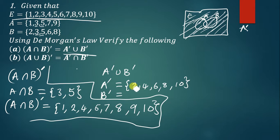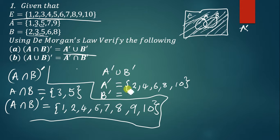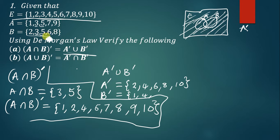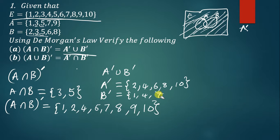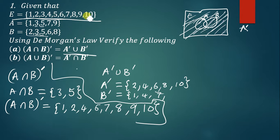Now let's find B'. B' is listing everything not in B but present in the universal set E. Going through E: 1 is not in B so we write 1; 2 is in B; 3 is in B; 4 is not in B so we write 4; 5 is in B; 6 is in B; 7 is not in B so we write 7; 8 is in B; 9 we write; 10 we write. So B' = {1, 4, 7, 9, 10}.